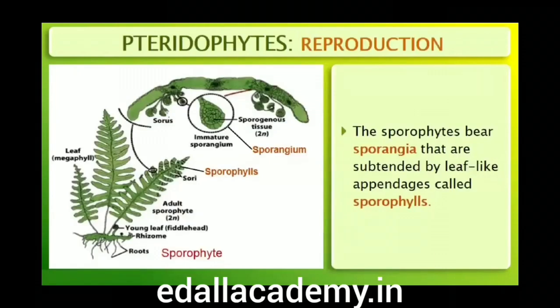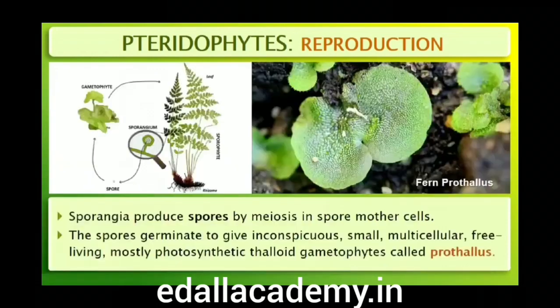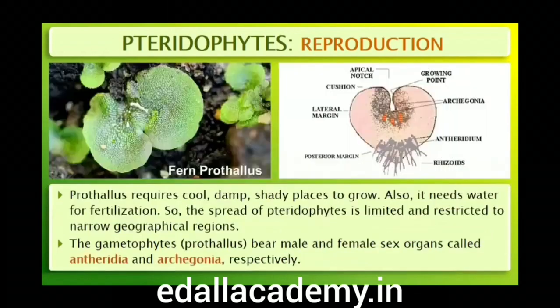The sporophytes bear sporangia that are subtended by leaf-like appendages called sporophylls. In some cases, sporophylls may form distinct compact structures called strobili or cones, as in Selaginella. The sporangia produce spores by meiosis in spore mother cells. The spores germinate to give rise to inconspicuous, small but multicellular, free-living, mostly photosynthetic thalloid gametophytes called prothalli.